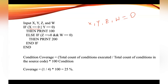Statement three will be executed, resulting in printing 100. Then the condition 'if z equal to zero and w equal to zero' in the else part won't be executed. So we have four conditions total, and out of four only one condition got executed. Condition coverage equals the total count of conditions executed divided by the total count of conditions in the source code, multiplied by 100. So one out of four into 100 gives condition coverage of 25 percent.